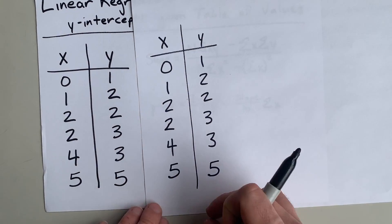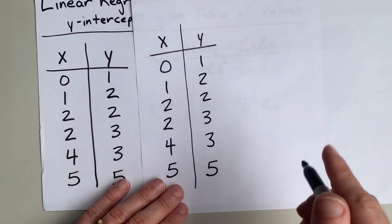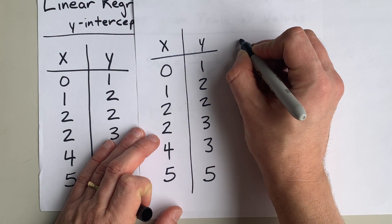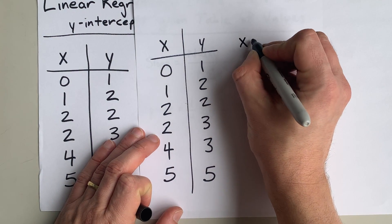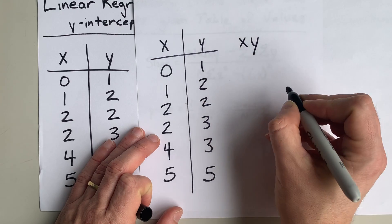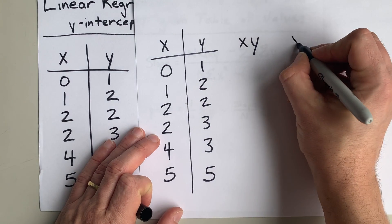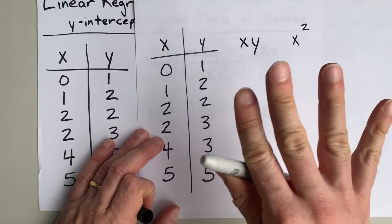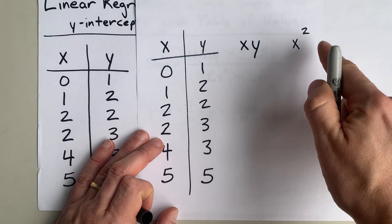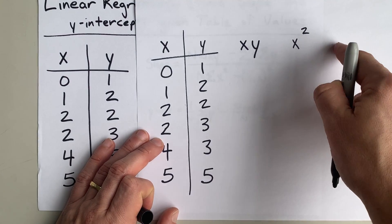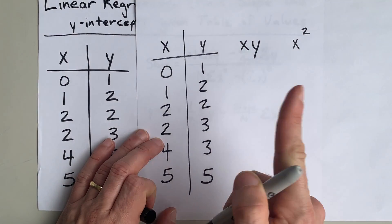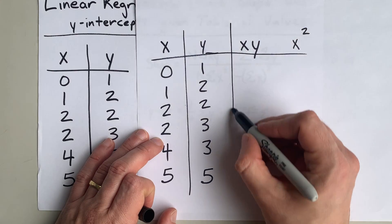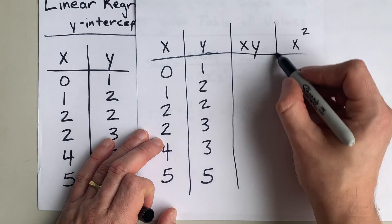Leave some space at the bottom. Then add columns for x·y and x-squared. If you're being asked for standard deviation, you'd also need y-squared, but since we're just looking for slope and y-intercept, we'll leave it here.